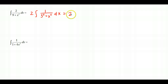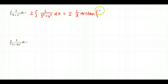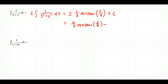Applying the formula with a equals 3, we get 2 times 1 over 3 times arctangent of x over 3, plus c. Simplifying, this is 2 thirds times arctangent of x over 3, plus c. This is the general antiderivative of the original function.